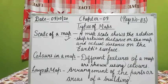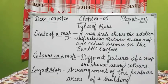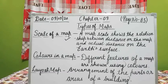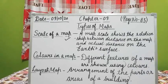Now we will read what is the scale of a map in detail. When we look at the map of India, we know that Mumbai is towards the south west of Delhi, but it is difficult to determine the actual distance between them. To make a map useful, map makers establish a relationship between the distance of places on the map and their actual distance on the earth's surface, and this is known as the scale of a map.